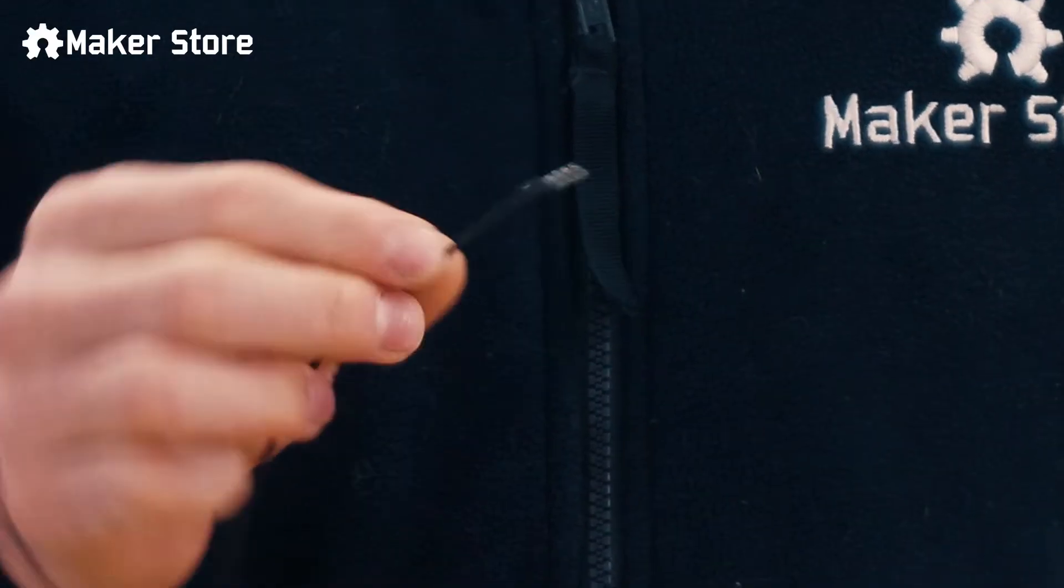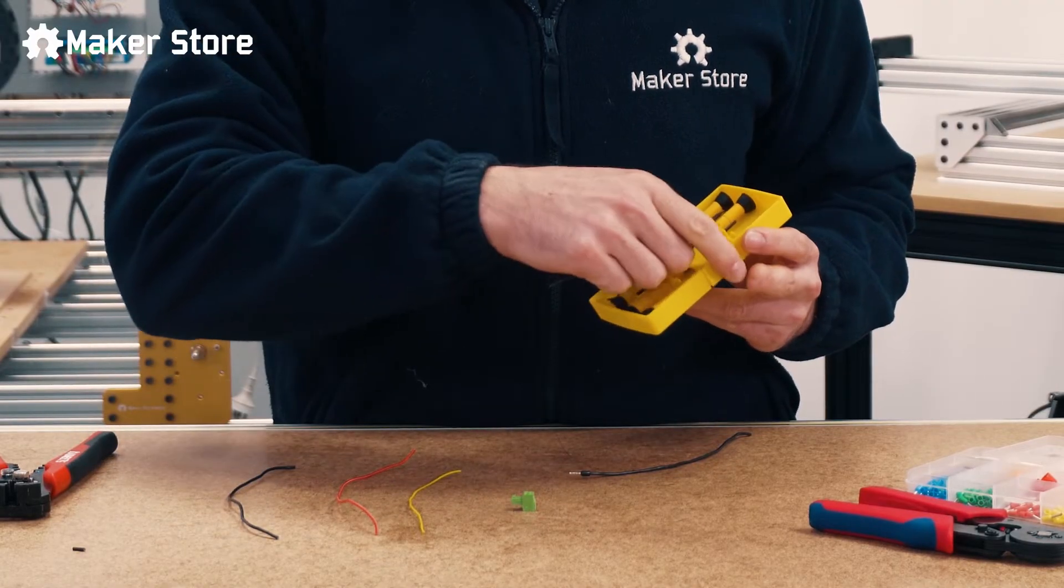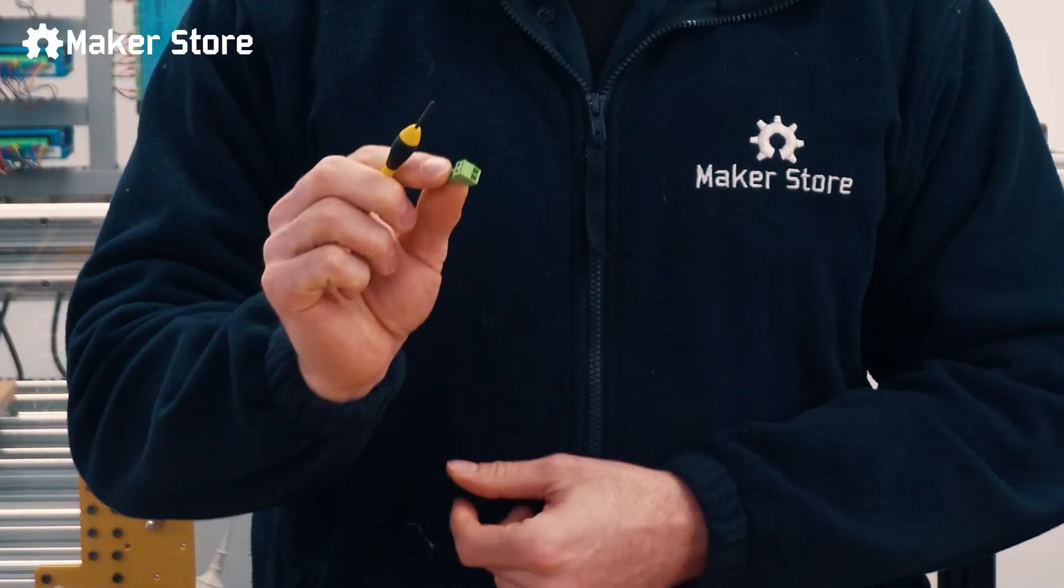And there you have it, a nicely crimped wire. Now that your wires are crimped, you can insert them into your EDG screw terminals with ease.